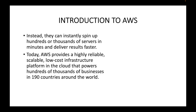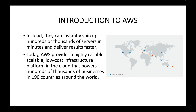Today AWS provides a highly reliable, scalable, and low-cost infrastructure platform in the cloud, powering hundreds of thousands of businesses in 190 countries around the world. The infrastructure is available all over the world with different regions hosting physical data centers managed and maintained by AWS. As end users, we utilize these resources in the form of virtualized resources — virtual servers, virtual storage, virtual networking — and we can choose which region to deploy our infrastructure based on our customer base and requirements.